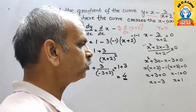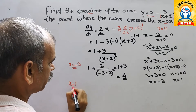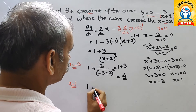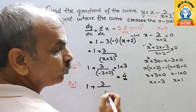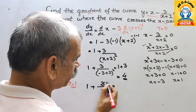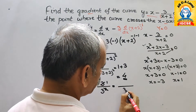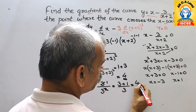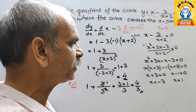For the second value, substitute x = 1. We get 1 + 3/(1+2)² = 1 + 3/9 = 1 + 1/3. Taking LCM of 3: (3+1)/3 = 4/3. So the second gradient is 4/3.